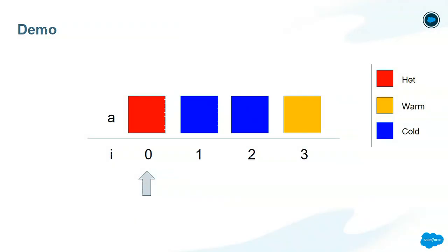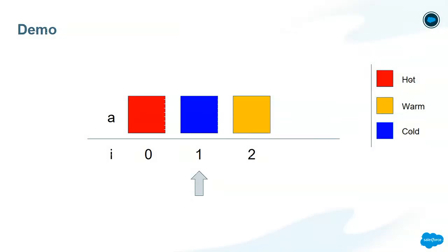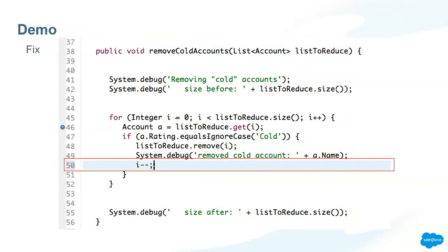So this is a simulation of how the debugger would work. We have the list of accounts, A which is an instance of the account, and I which is our index during the iteration. At first, our index is zero and at that index we have a hot account, so our code skips it and moves to the next iteration. At the next iteration, we do have a cold account, so our code removes it. When it does, all the remaining elements get shifted by one. But at the end of iteration one, when we move to the next iteration, we've essentially skipped over the cold account — and that's why it remains in the list. An easy fix is to decrement the index every time we remove an element, so we don't skip over any consecutive cold accounts.